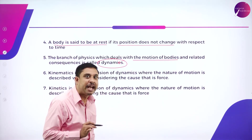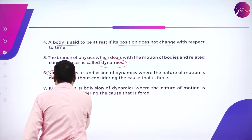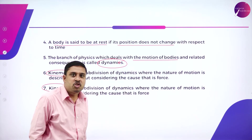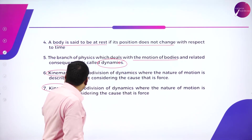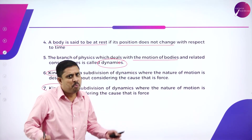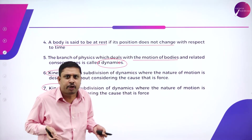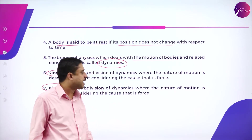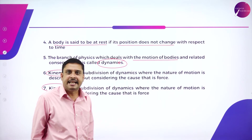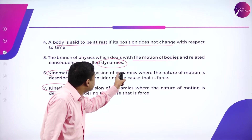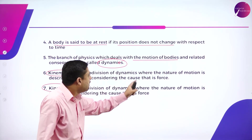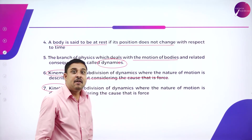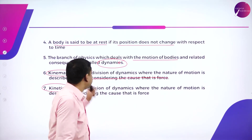There are two subdivisions of dynamics: one is called kinematics and the other is called kinetics. Both explain the consequences related to motion since dynamics deals with motion. What is the basic difference between them? Kinematics is a subdivision of dynamics where the nature of motion is described without considering the cause.